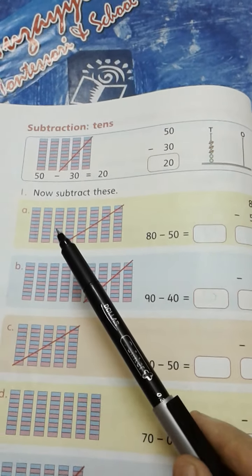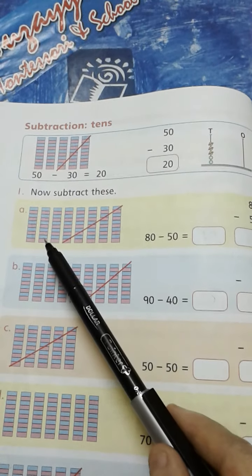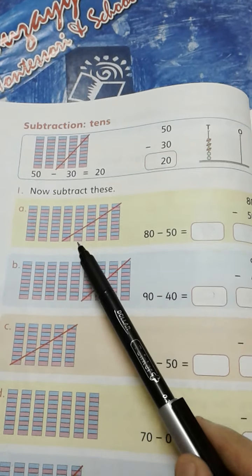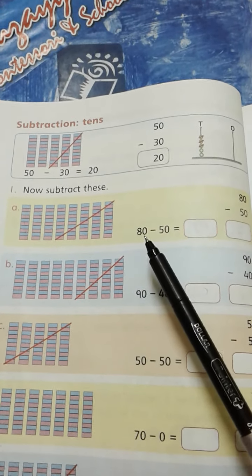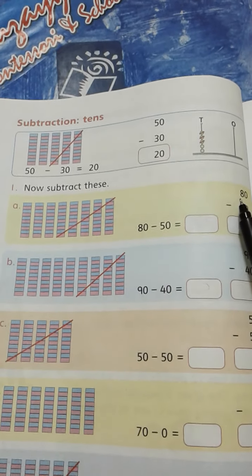So let's start counting tens: 1, 2, 3, 4, 5, 6, 7, 8. And 8 tens means 80.